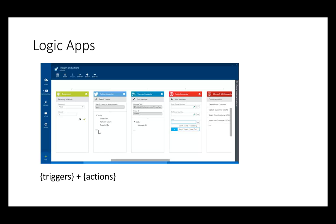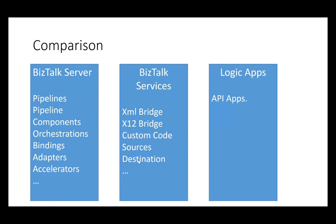The marketplace is really rich with about 40 or 50 connectors so far. Any business process which you want to automate, you should be able to go ahead and do it. And a good aspect is that if you don't find the SaaS service or the custom LOB application required for your integration scenario, you can build one yourself. You can create a custom API app — we have released the SDK version of it and you can use it to create one yourself.